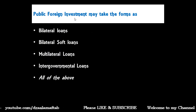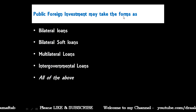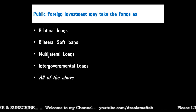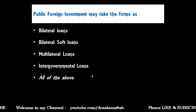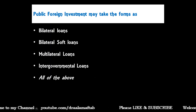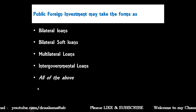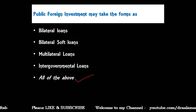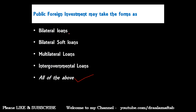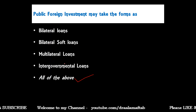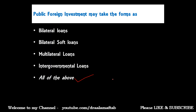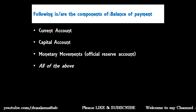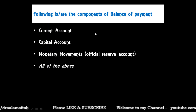Public foreign investment may take the forms of — bilateral loans, bilateral soft loans, multilateral loans, intergovernmental loans, or all of the above? The correct answer is all of the above. Public foreign investment may take the form of bilateral loans, soft loans, multilateral loans, as well as intergovernmental loans.